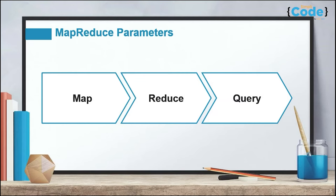Now let us understand the key parameters in MapReduce. MongoDB provides a MapReduce feature for aggregation purposes, and generally there are two phases. In the first phase — the map function — each document is processed and emits the common and redundant parts of the document to pass a unique record to the next phase. In the second phase — the reduce function — all the unique parts get together and aggregate to produce a single result. Finally, we have the query, which filters the result set. With MapReduce, users can perform sorting, filtering, and document modification.